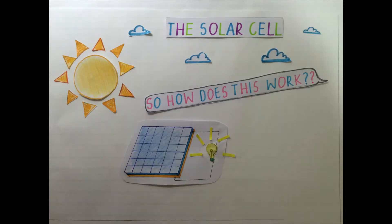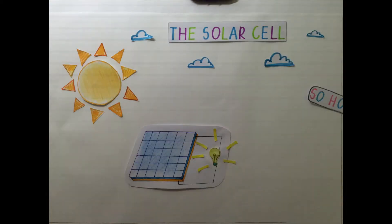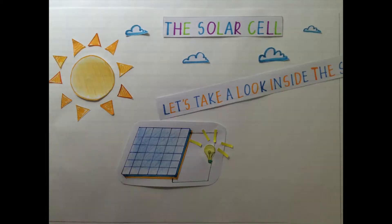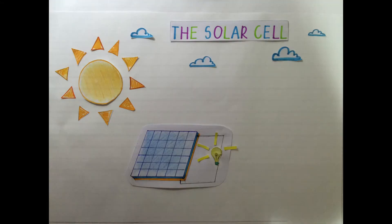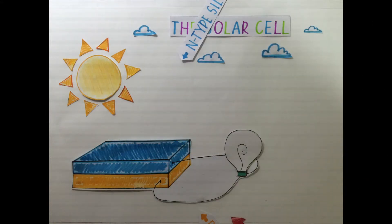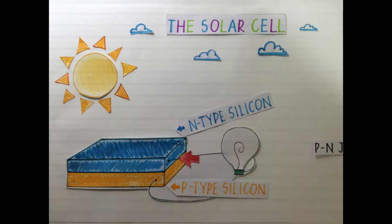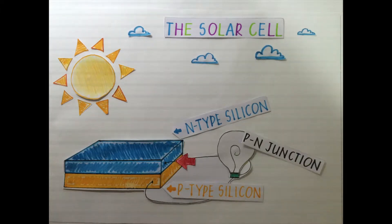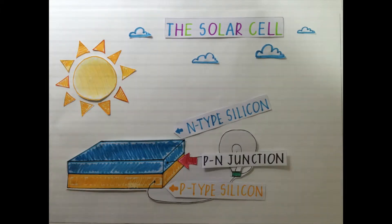So how does this work? Let's take a look inside the solar cell. The solar cell is made of an N-type silicon connected to a P-type silicon. This is known as a P-N junction.